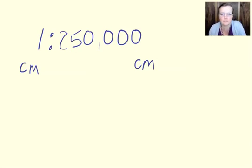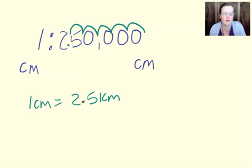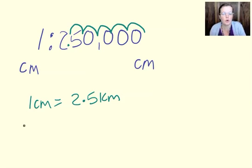So we use it in different units. We go centimetres, decimetres, hectometres, kilometres. So now we know that one centimetre equals two point five kilometres.